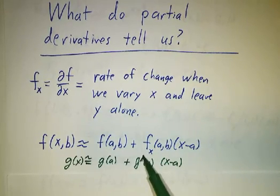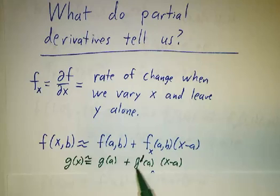We use the derivative, g prime of a tells you how fast the function is changing, and if you multiply that by the change in x, you get the change in the function.